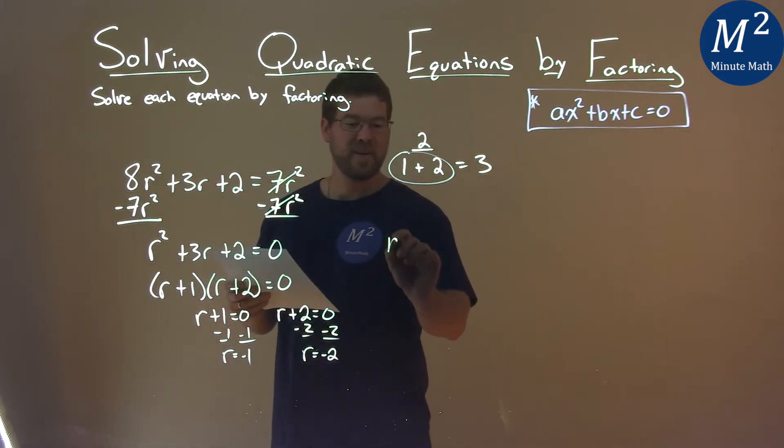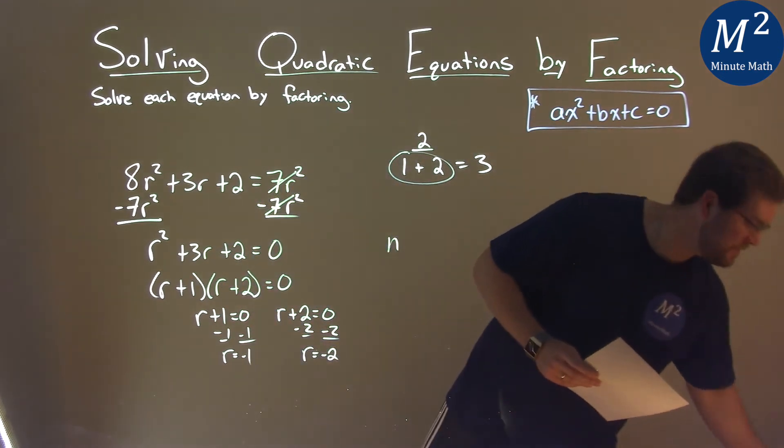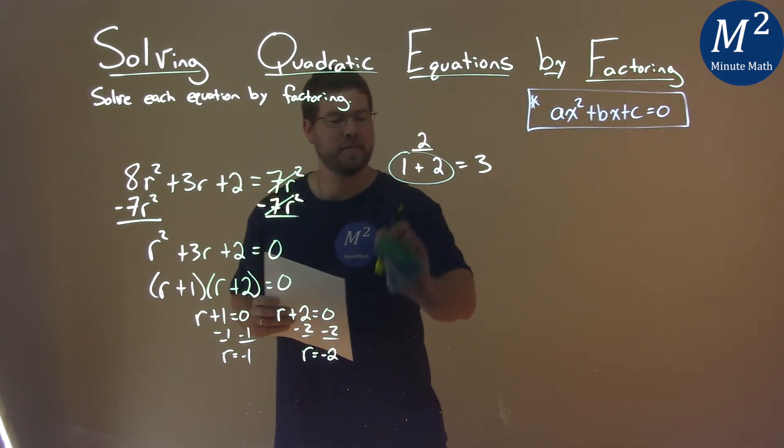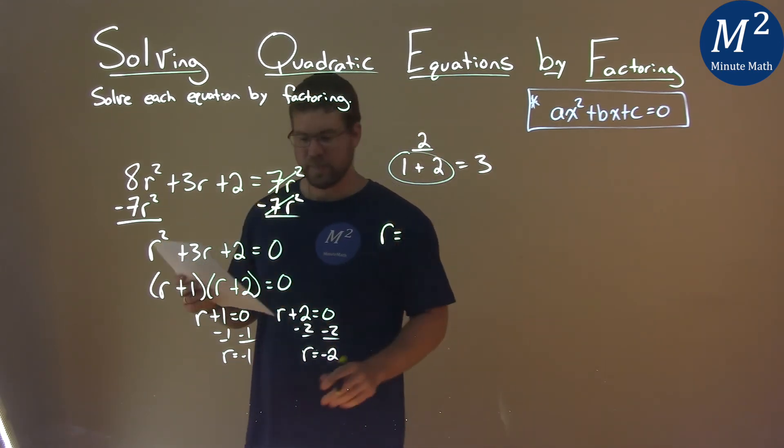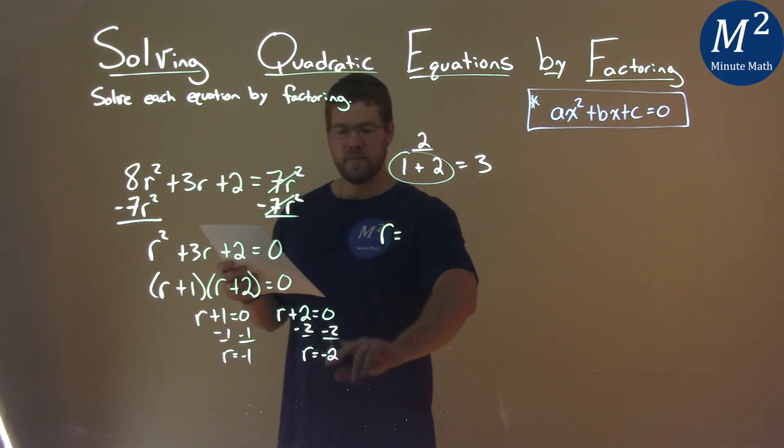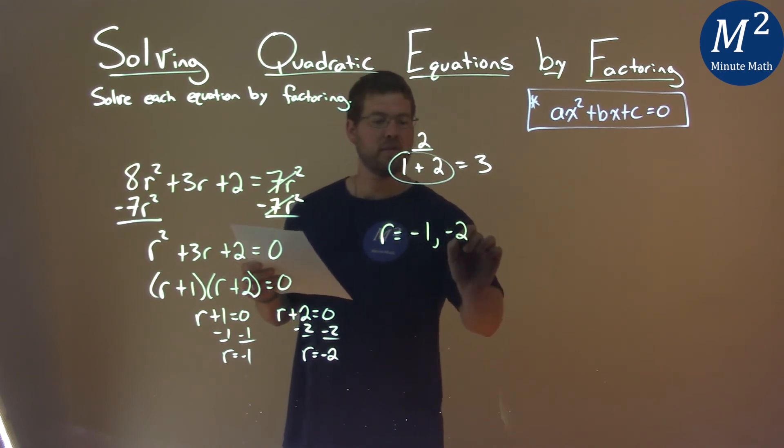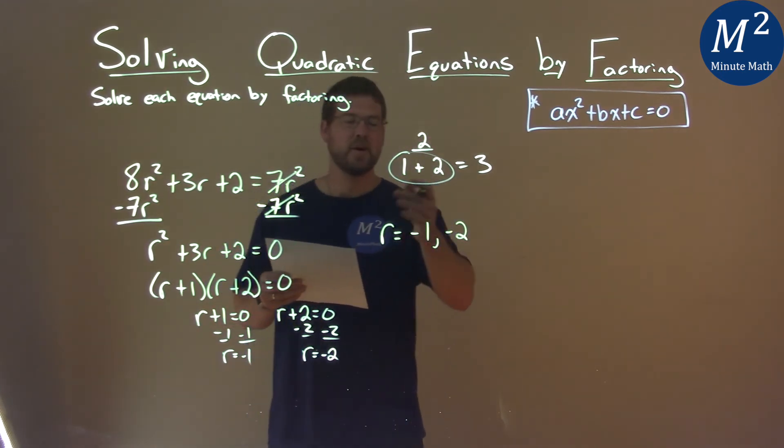Not too bad. We now can, oh, that's an n. I want an r. I should learn my letters. r is equal to, we write as one statement, negative 1 and negative 2, and that is our final answer.